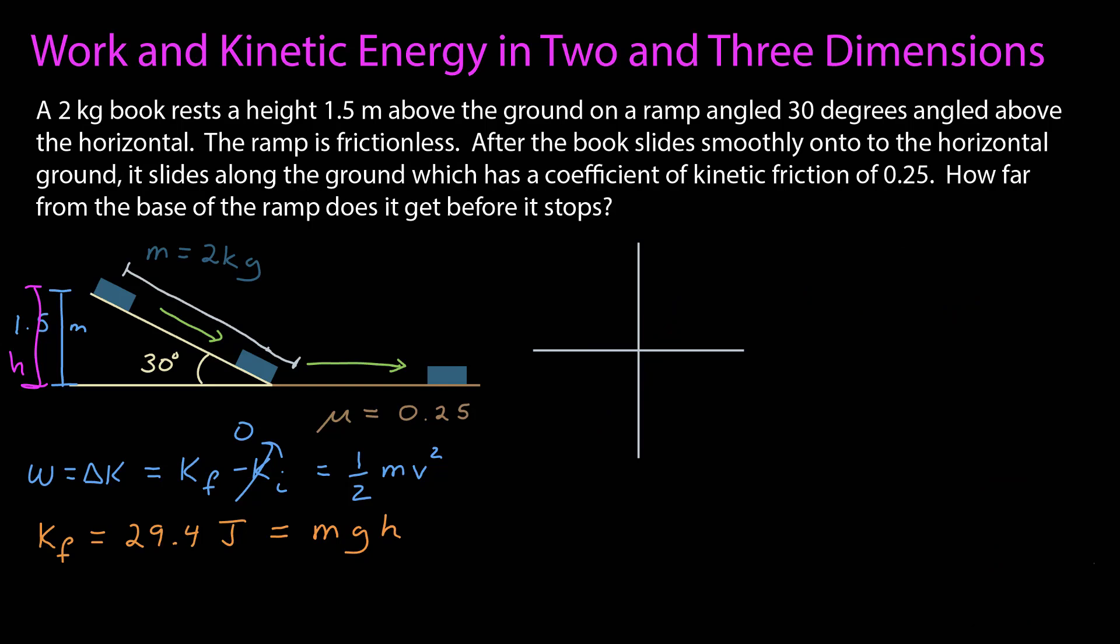Now, let's look at the situation where it's sliding along the ground. Let's first find the forces. So there's a force due to gravity still, and there's a normal force that's perpendicular to the surface, and now we have a frictional force that is slowing it down.